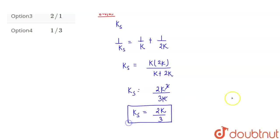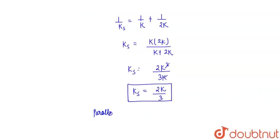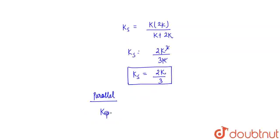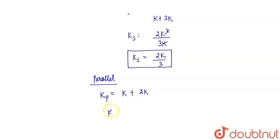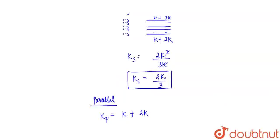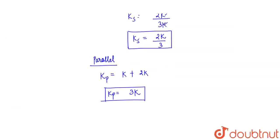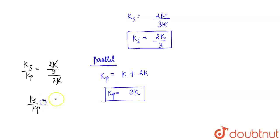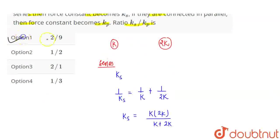Now we calculate Ks upon Kp. For parallel connection, Kp = K + 2K = 3K. So the ratio Ks upon Kp equals (2K/3) divided by 3K, which gives 2/9. Checking the options, option number 1 is the right answer.